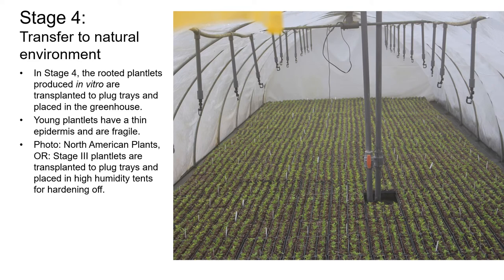During stage four, the plantlets that were rooted in vitro during stage three are transplanted to plug trays and moved to the greenhouse. At the beginning of stage four, the plantlets have a very thin epidermis. The roots are often thin and fragile and the plantlets are very vulnerable to any kind of environmental stress. The plantlets need to be acclimatized and hardened off gradually to avoid large losses. Immediately after transplant, the plantlets should be given 100% relative humidity. Light levels should be gradually increased over a four-week period, and both ambient and root zone temperatures should be maintained at levels that promote growth and reduce stress — usually a range between 65 and 75 degrees Fahrenheit, varying with species. The plantlets may need bottom heat to maintain the root zone temperature at the desired level.